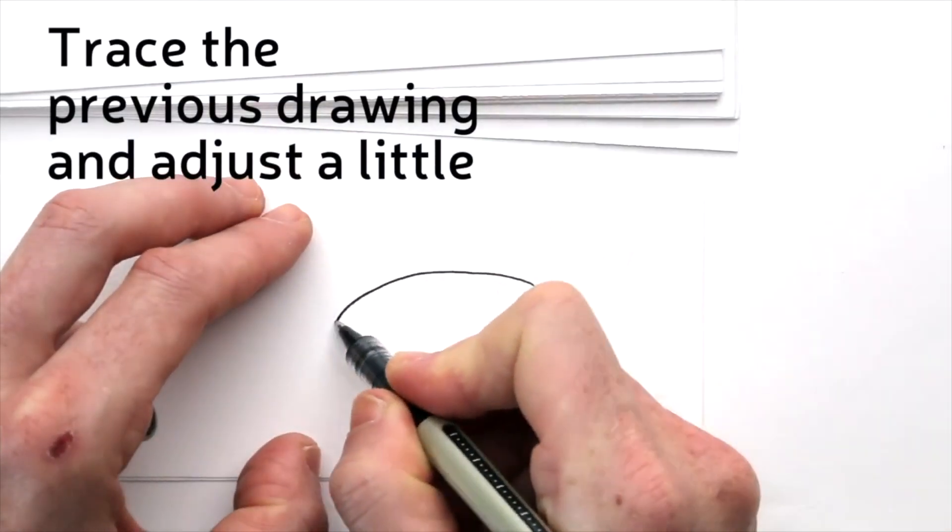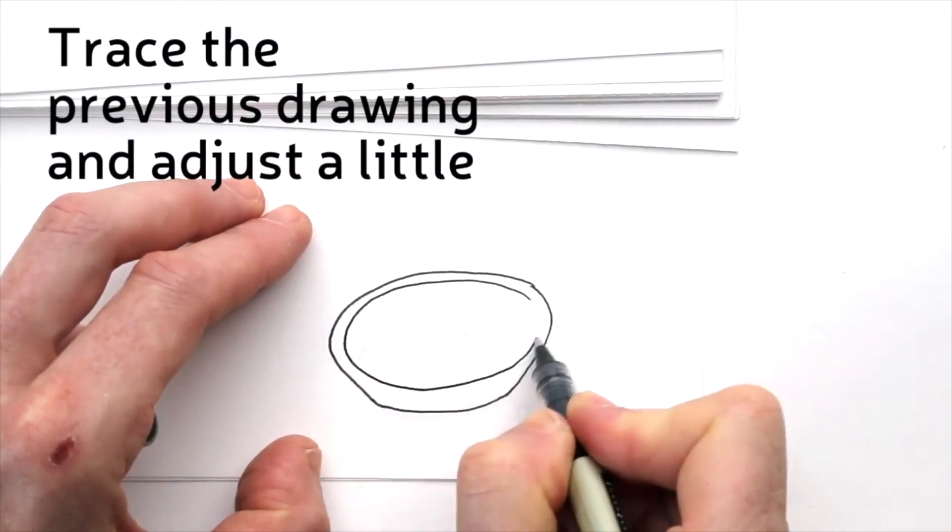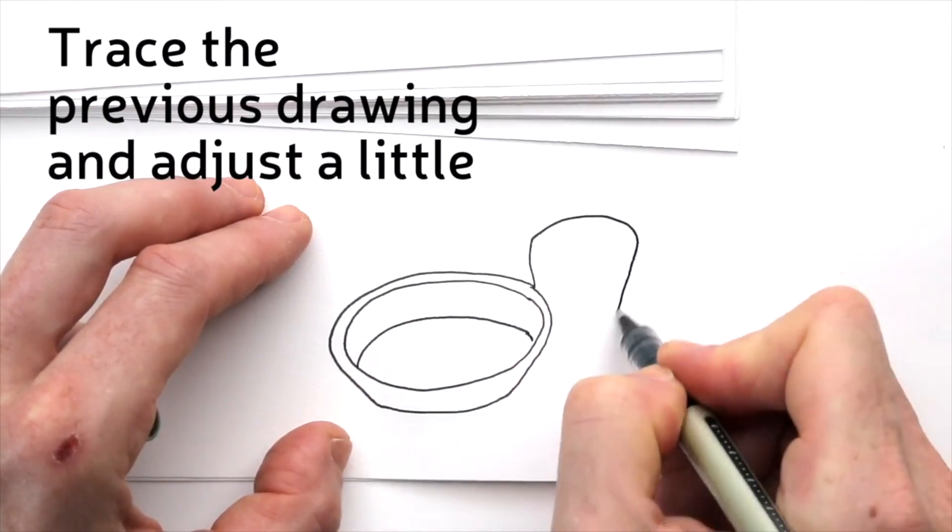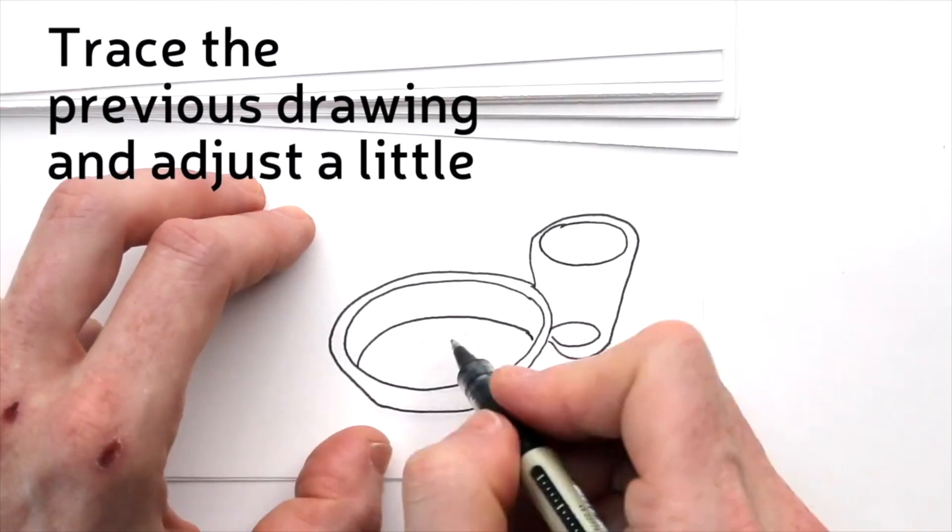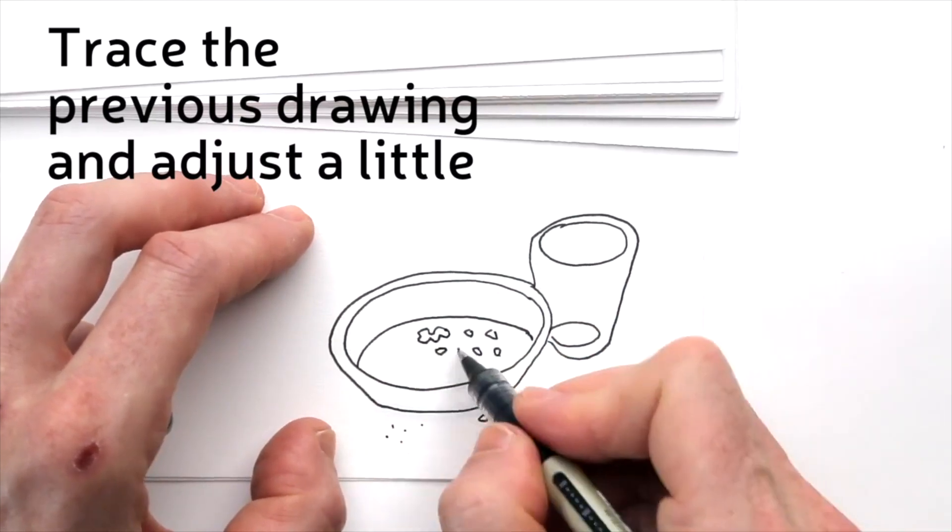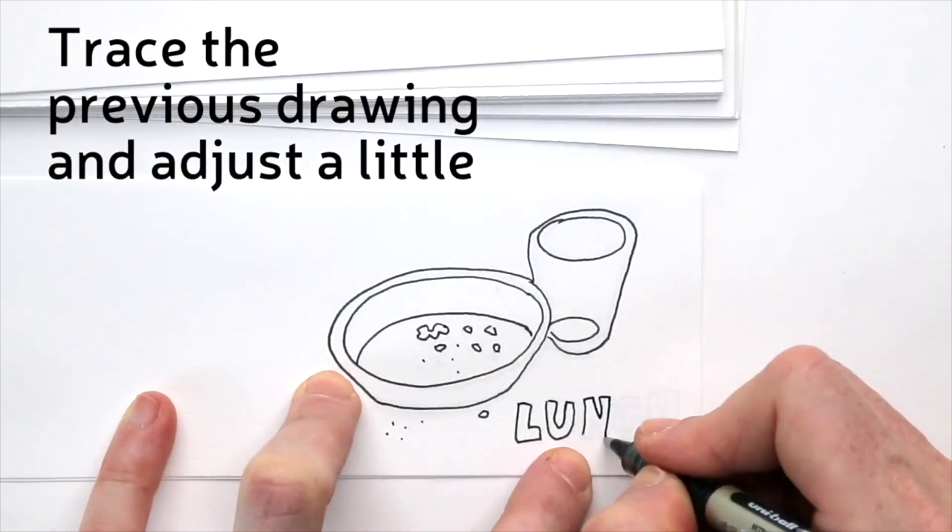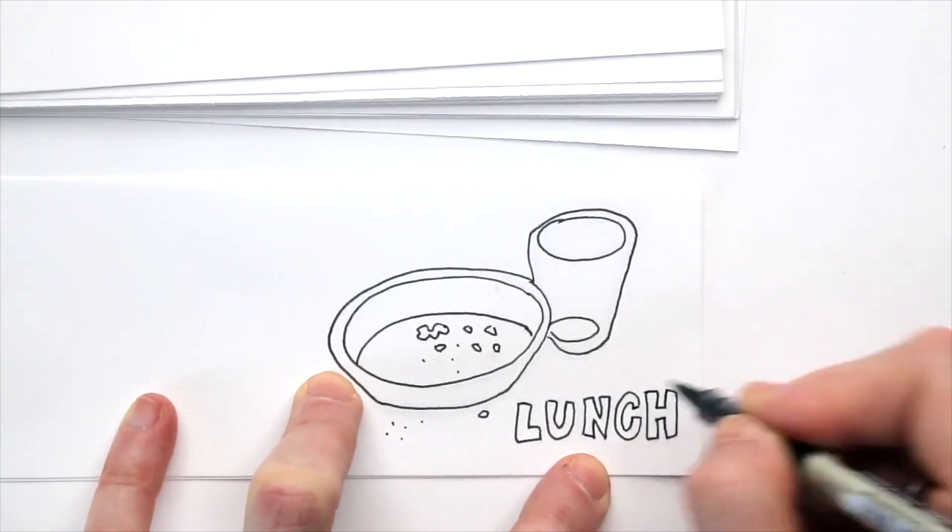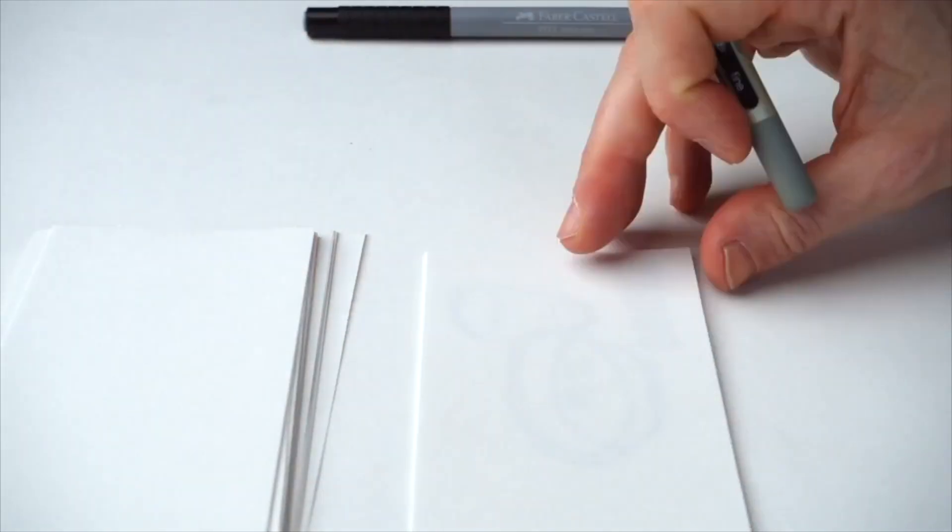Now I will put the next sheet on top and trace my previous drawing. But I adjust a tiny little bit. If I add a little shape with each sheet that I fill, in the end I will get to the first frame, where the plate will be filled with salad and fried eggs. And the glass will be full. It's a lot of work, but it's fun too.